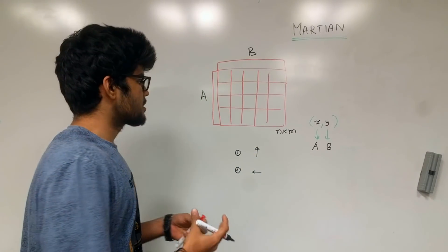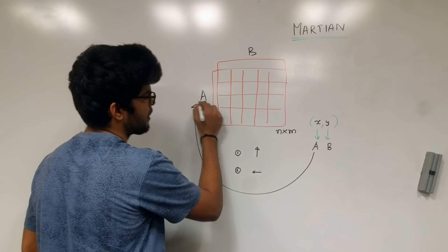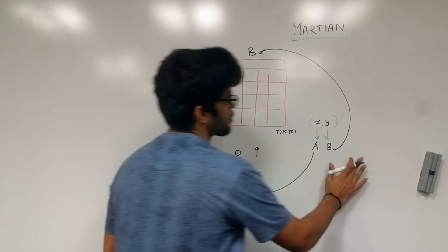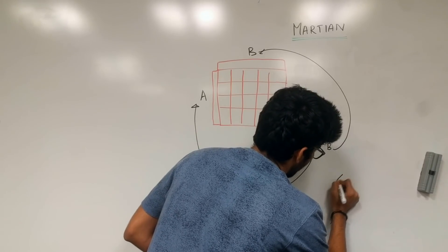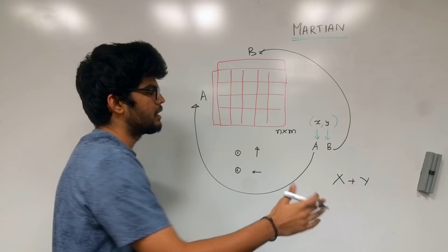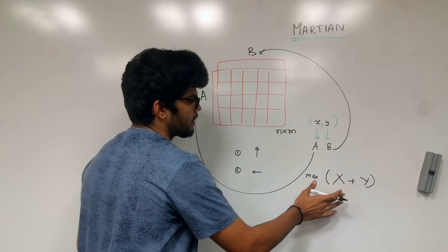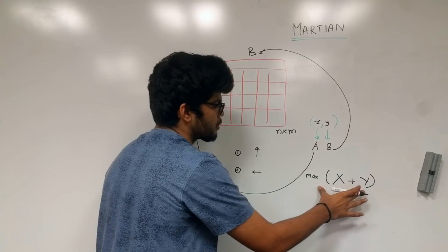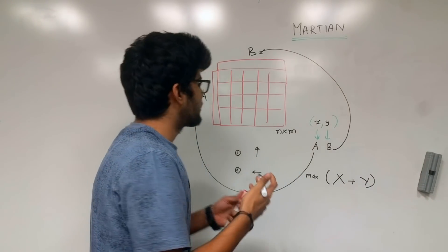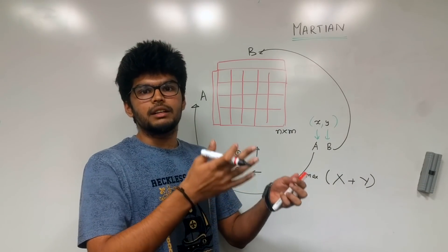The objective of the problem is to supply minerals to their respective mines — mineral A to mine A and mineral B to mine B — in such a way that the quantity of minerals supplied is maximum. So if capital X is the amount of mineral A supplied to mine A and capital Y is the amount of mineral B, you need to find max of X plus Y. Each cell can have only one type of belt, so you cannot have both types of conveyor belts in the same cell.